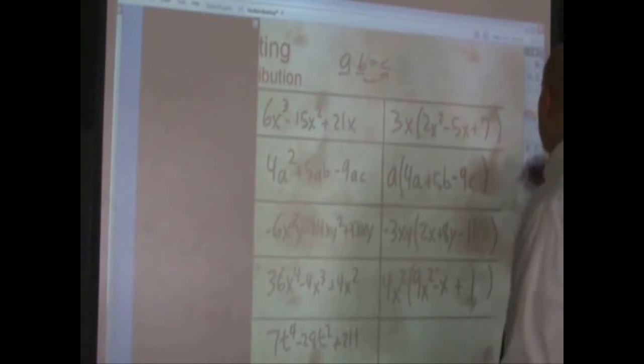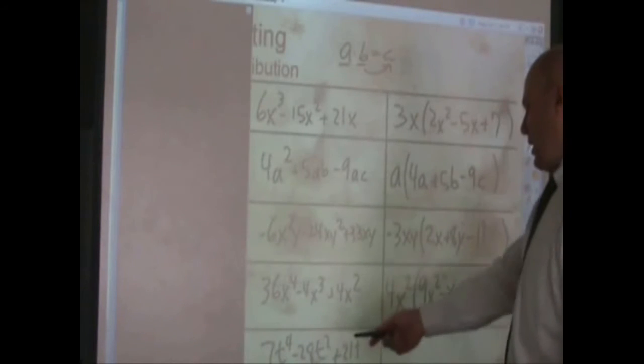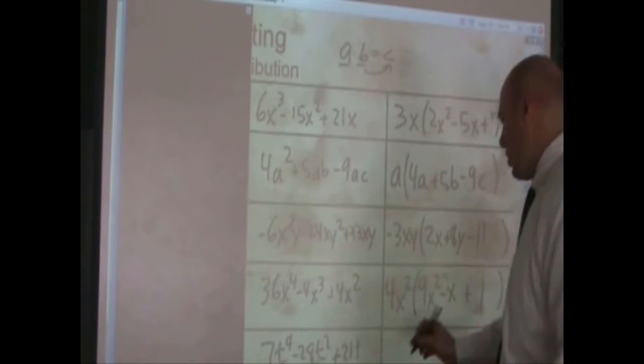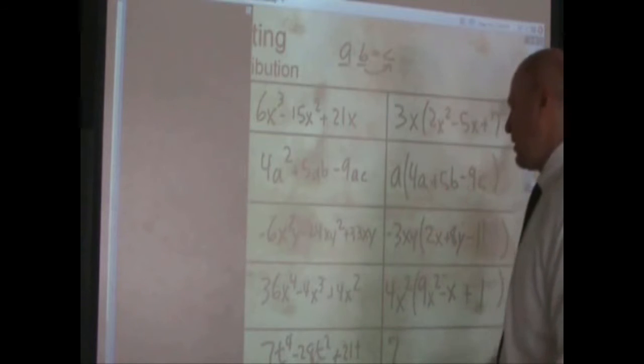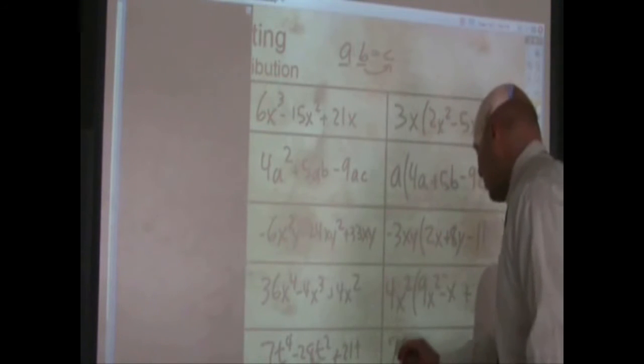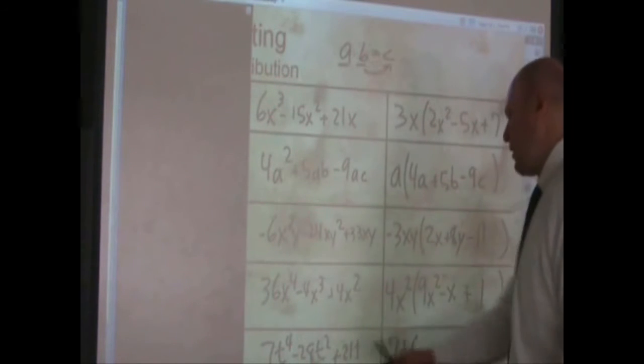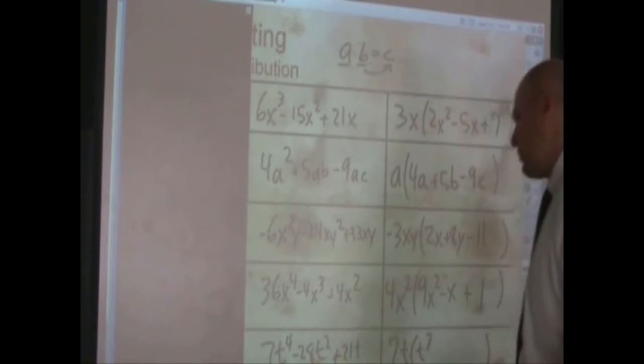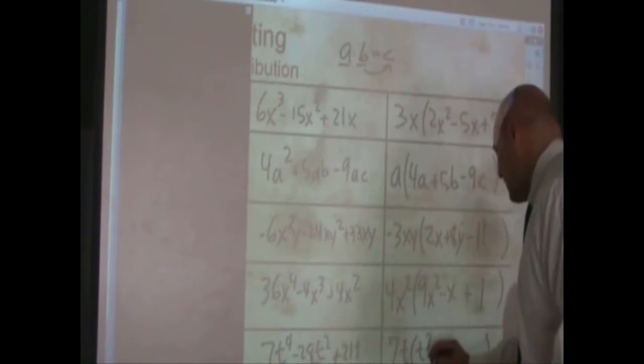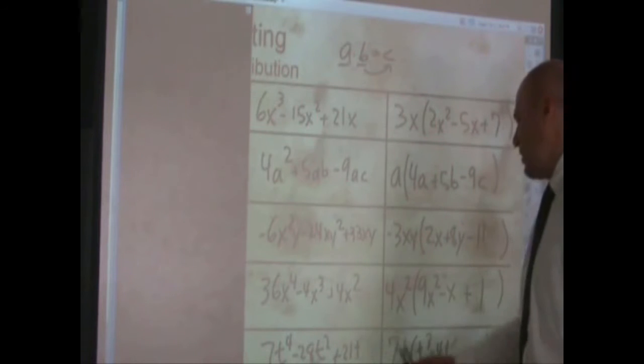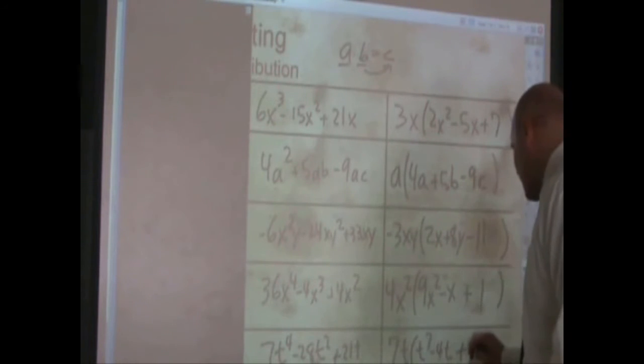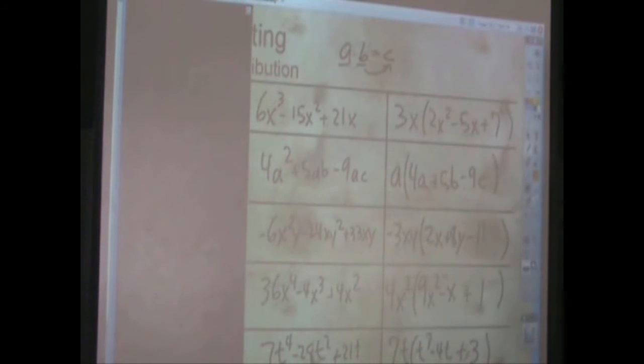Alright, last one. 7, negative 28, and 21 are all multiples of 7. I can pull out a t, so I pull out 7t. Pulling out 7t from there leaves t cubed. Pulling out 7 there leaves negative 4t, and 7t there leaves behind a 3. So there's the factoring.